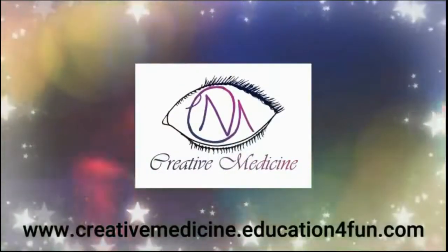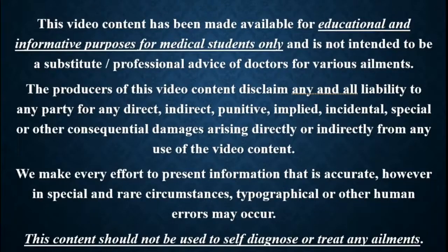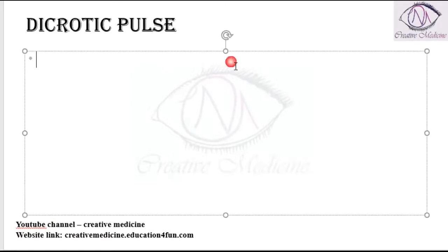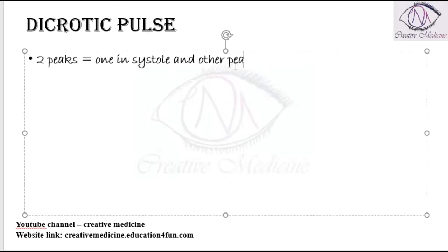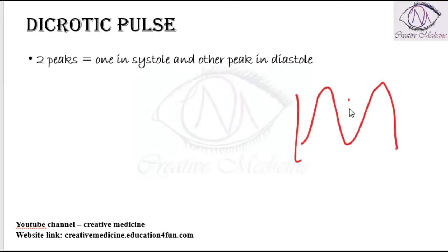Hello friends, welcome to Creative Medicine. In this lecture, we will learn about dicrotic pulse. Dicrotic pulse means two peaks are present — one peak is in systole and the other peak is in diastole. So in dicrotic pulse, we have two peaks: one peak is in systole whereas the other peak is in diastole.